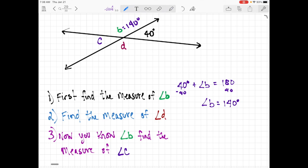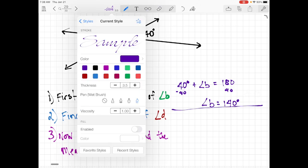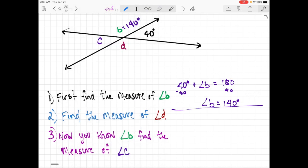So next, it asks us to find the measurement of angle D. Let's change colors. Okay, well, we know these two angles also make a straight line. So that is also a linear pair. So we're going to say 40 degrees plus angle D equals 180 degrees. And we're going to do the exact same thing. We're going to subtract 40 degrees on both sides. And we get angle D is also equal to 140 degrees. So we put that in, 140 degrees.